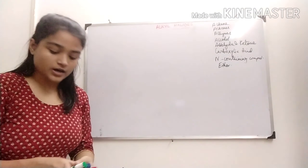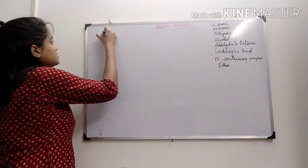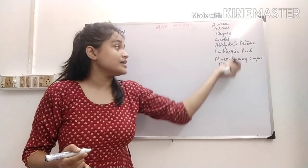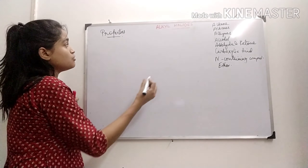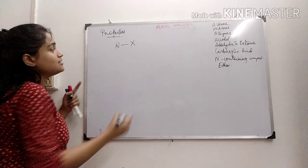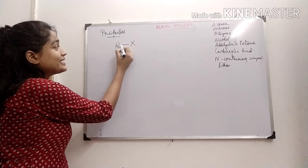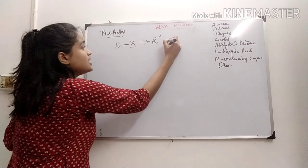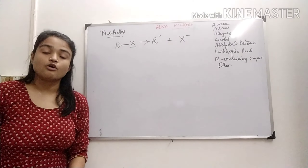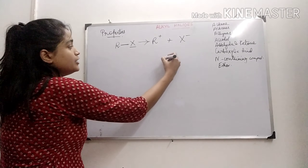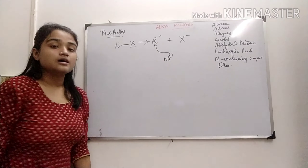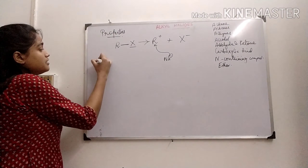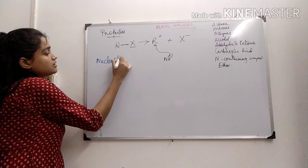Now we will see the chemical properties of the alkyl halides — what reactions alkyl halides take part in. Alkyl halides are polar compounds, so this bond can be easily cleaved, the halide can be easily substituted, giving rise to a carbocation. A nucleophile can come and attack this carbocation. So the main type of reaction that alkyl halides undergo is nucleophilic substitution.